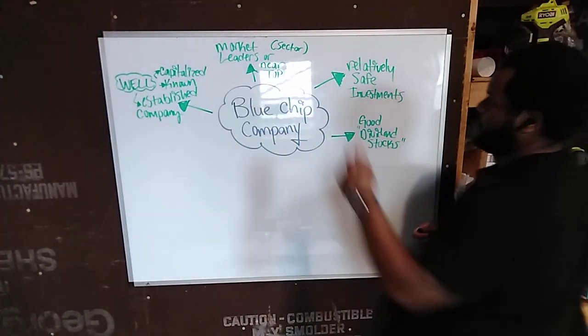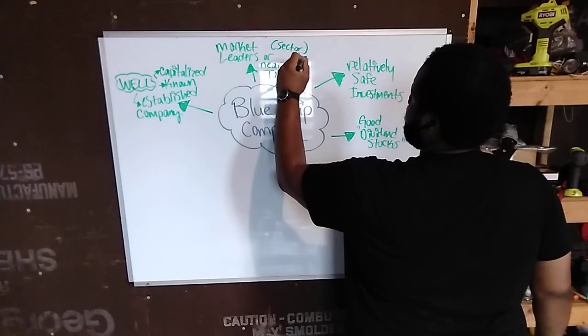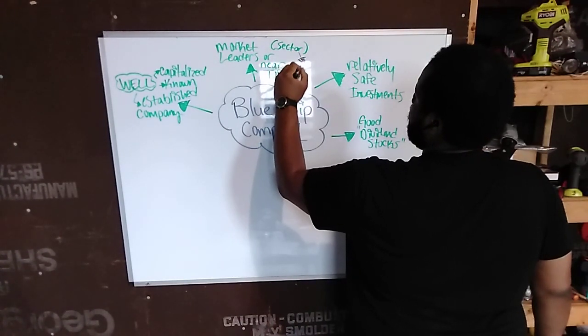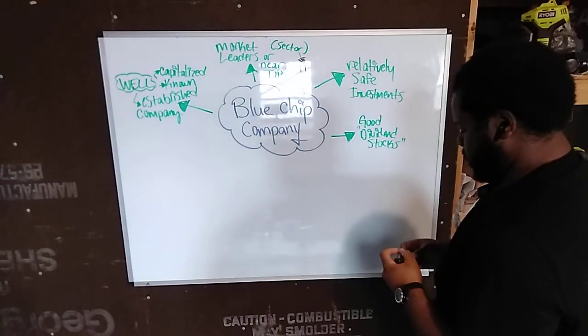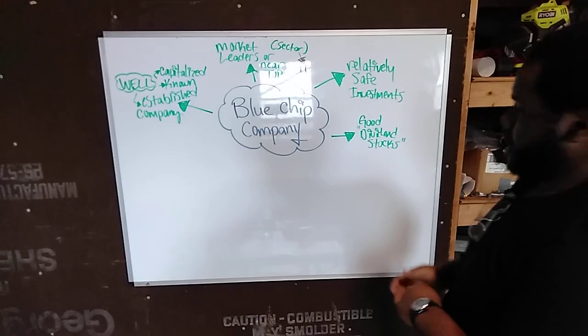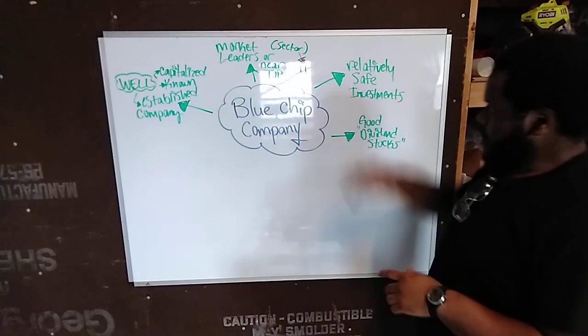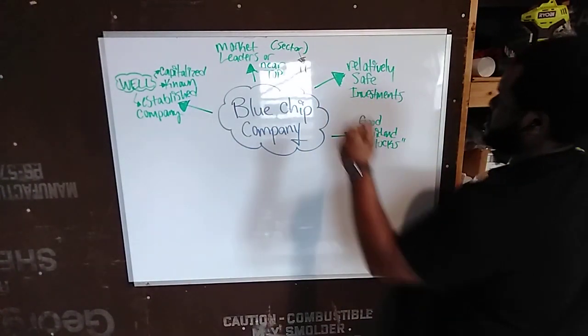There are 11 sectors of the market that range from finance, consumer staples, consumer goods, technology, industry materials. You have 11 total sectors.